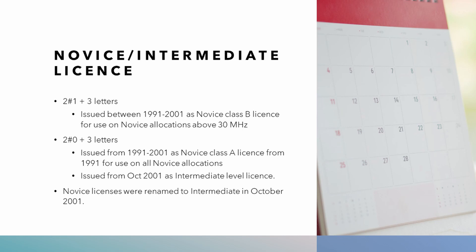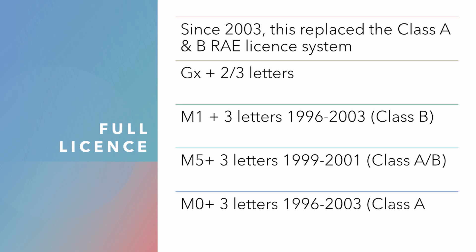The Intermediate licence started out life as the Novice licence. It was issued from 1991 through 2001 as the 2-1 plus three letters licence, which denoted a Novice Class B, giving the holder the ability to transmit on the Novice allocations above 30 MHz. Additionally, a Novice Class A licence was issued with the call sign 2-0 plus three letters. This later became the Intermediate licence level from October 2001.